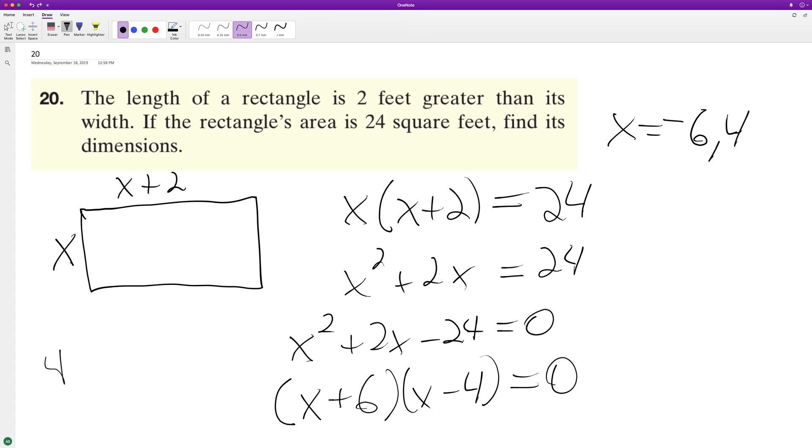So let's try that out. 4 times 6 does equal 24, so width equals 4 feet, length is 4 plus 2, which is 6 feet, and that's it.